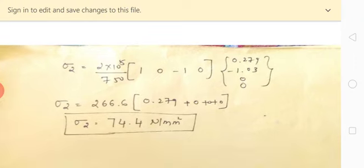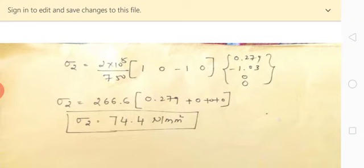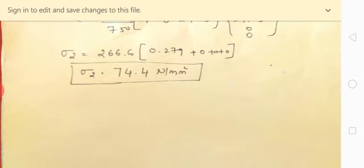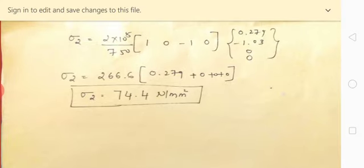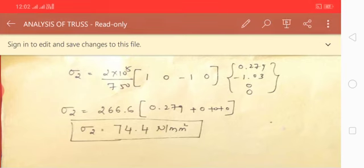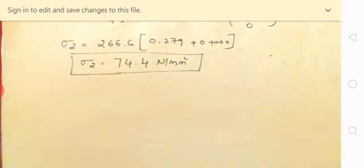For element 2, use the same stress formula with its own l and m values, and displacement vector starting from q3, q4, q5, q6 (since element 2 comprises nodes 2 and 3). q5 = q6 = 0, and q3, q4 were just calculated. After multiplication, the stress in element 2 is obtained. This is how nodal displacements and stresses in each element are calculated for the truss under the applied load.